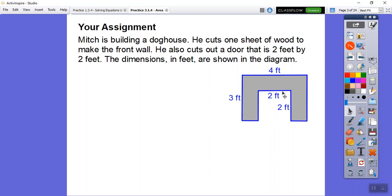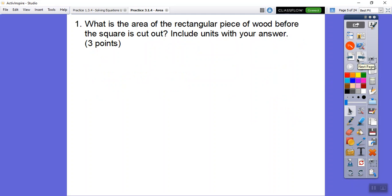It looks like the original is 3 by 4 before we cut it out, and then we cut out this little hole so the dog can walk through and have a nice dog house. Mitch is going to paint the wood. What's the area that he needs to paint? They want to know what's the area of this shaded region, this sort of upside down U-shape thing. What is the area of the rectangular piece of wood before the square is cut out?